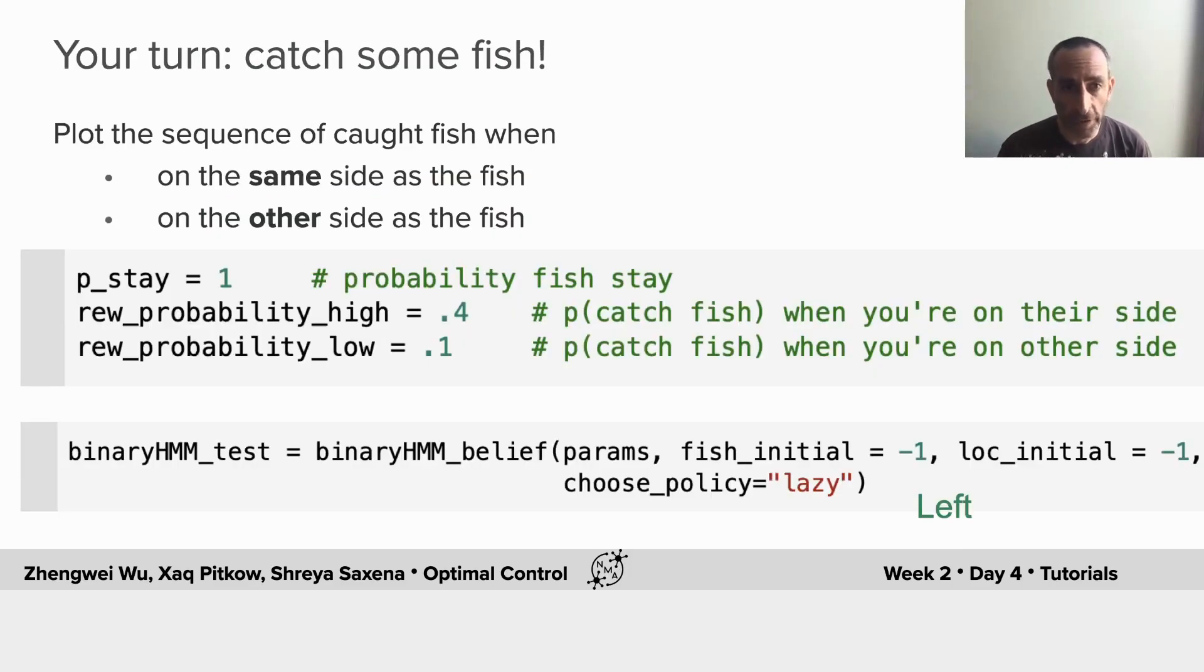So it's your turn to catch some fish. So here you can enforce the fish to stay on one side by picking p_stay equals 1. And then you have two reward probabilities, p_high and p_low.